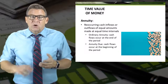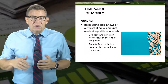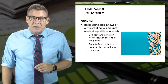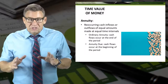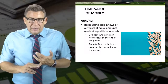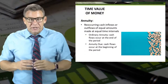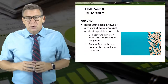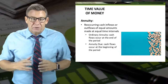An annuity is a reoccurring cash inflow or outflow of equal amounts made at equal time intervals — regular cash flows occurring year after year rather than a one-time amount. There are two classifications of annuities. An ordinary annuity is when the cash flow occurs at the end of the period, and an annuity due is when the cash flow occurs at the beginning of the period.